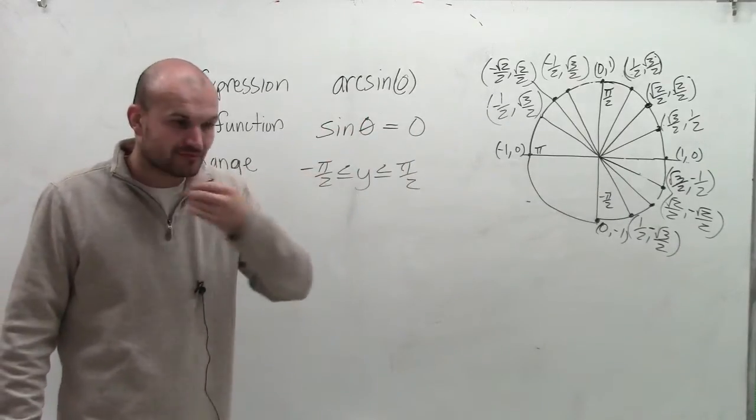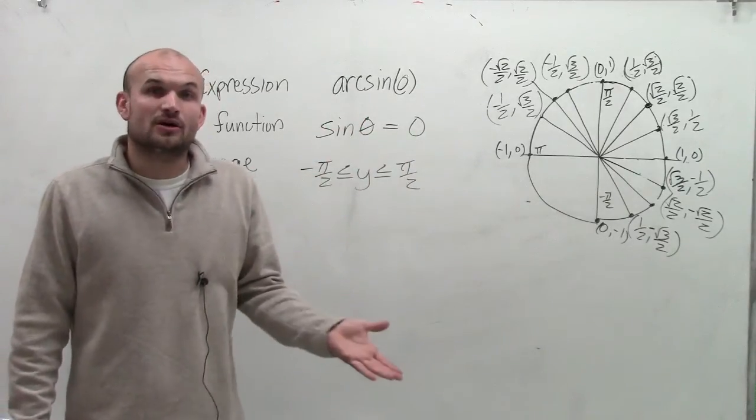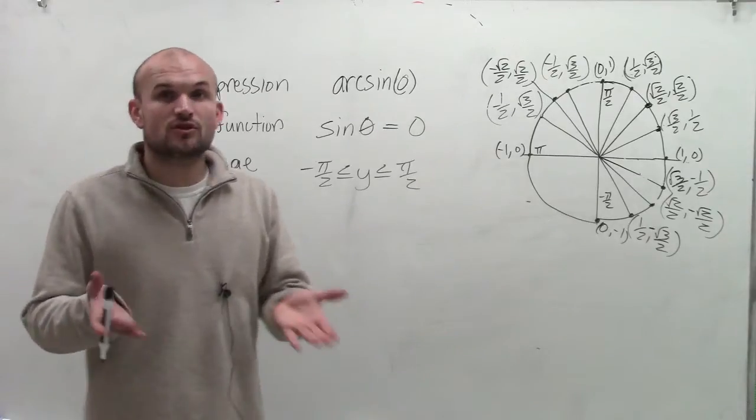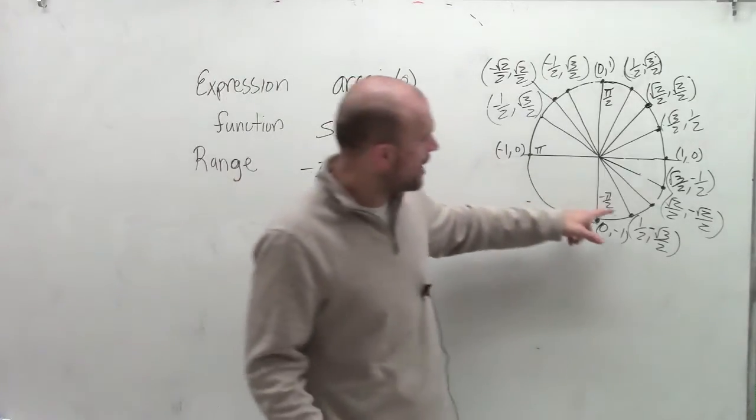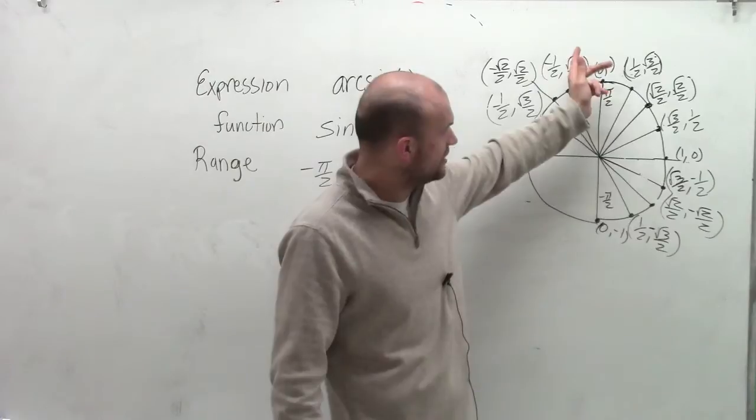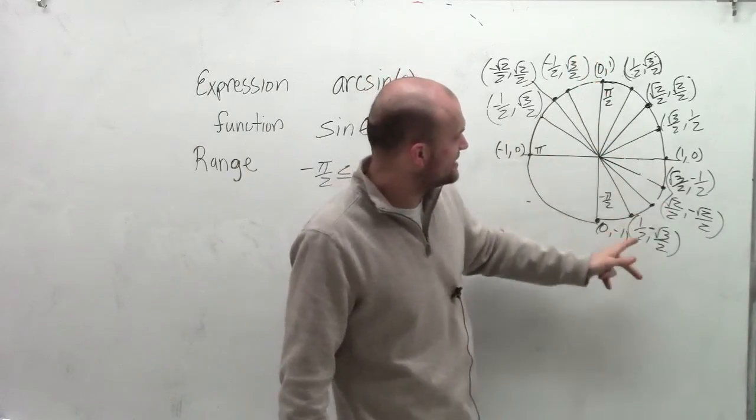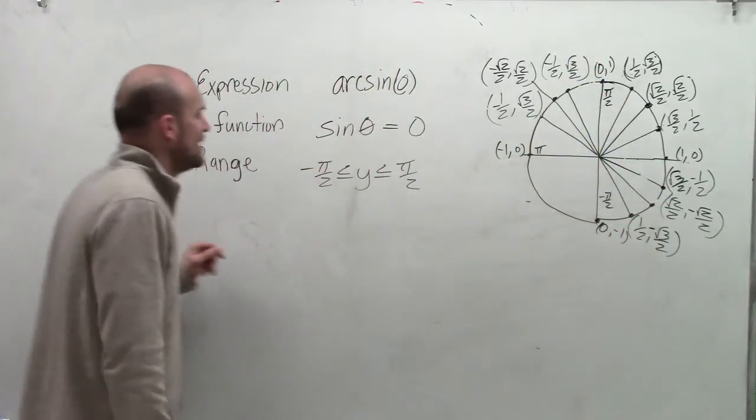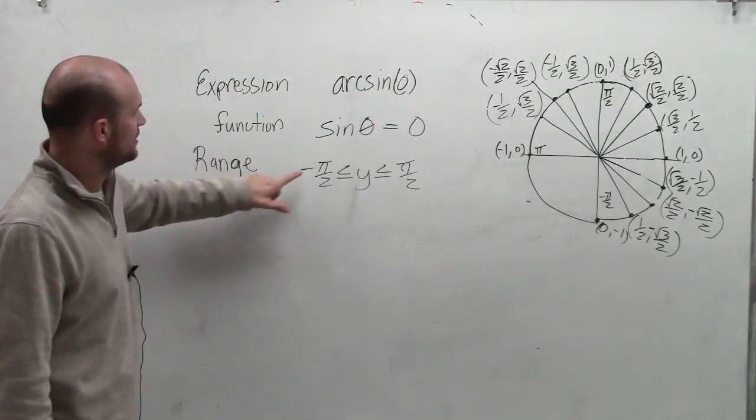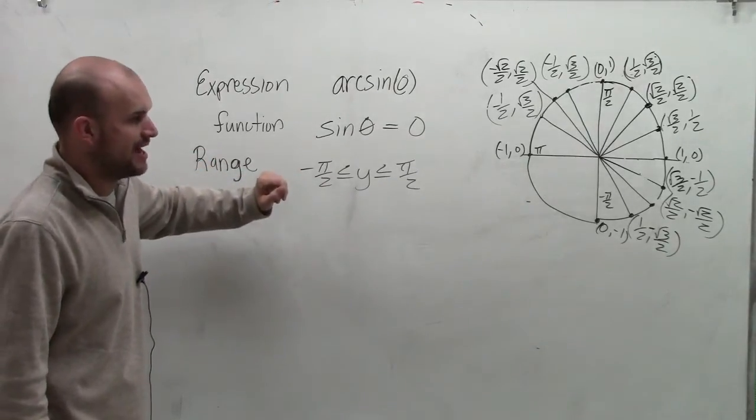Remember, when taking the sine of an angle, sine of an angle equals the y-coordinate. So I look at my y-coordinates and coordinate points on the unit circle, and determine which angle, when is it equal to 0, that falls within the range of negative pi halves and pi halves.